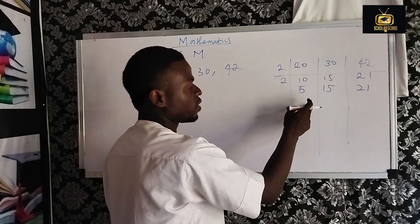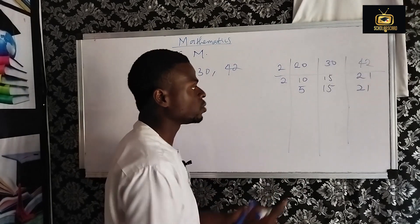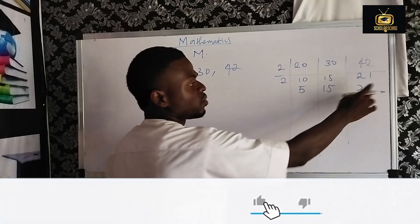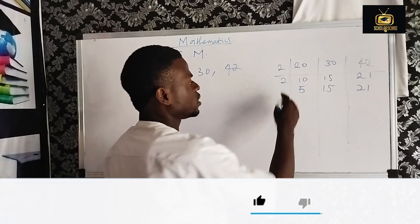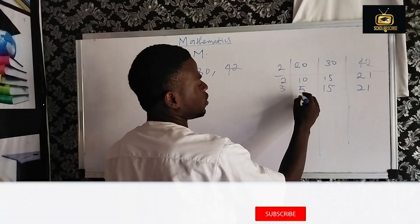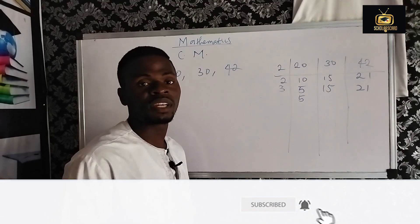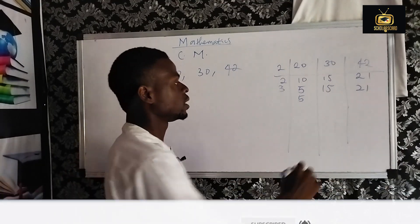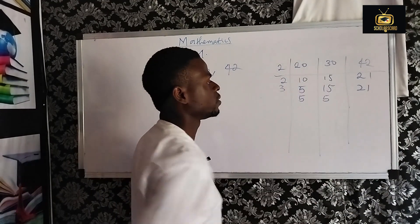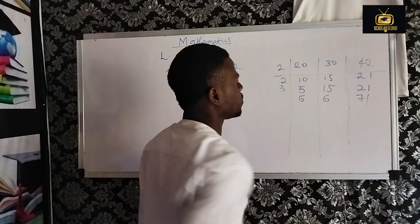Can 3 go into 5? No, it gives remainder 2. But 3 can go into 15 and into 21. So write: 3 into 5 — just write 5 since we cannot divide it perfectly; 3 into 15 gives 5; 3 into 21 gives 7.